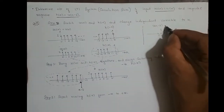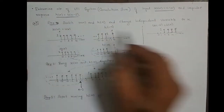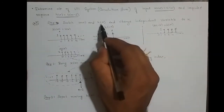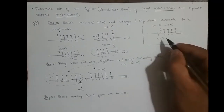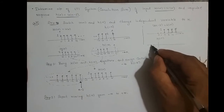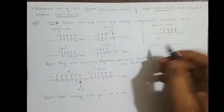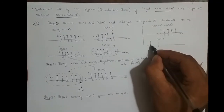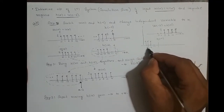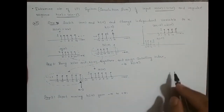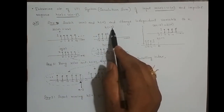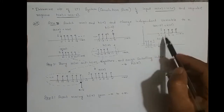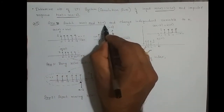What I need is h(-n), which is the mirror image of h(n). h(n) is u(n-2), so to get h(-n) I flip it. The sequence then starts from minus 2, minus 3, minus 4, and so on — its amplitude remains 1. So h(-n) is the mirror image of h(n), where h(n) is the unit step function shifted right two times.